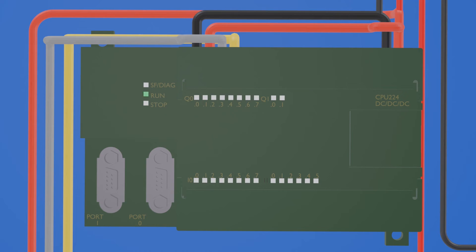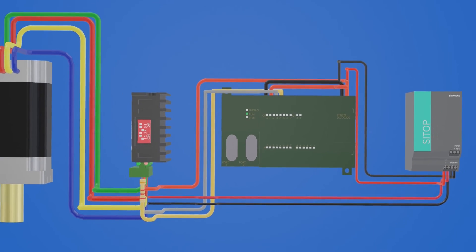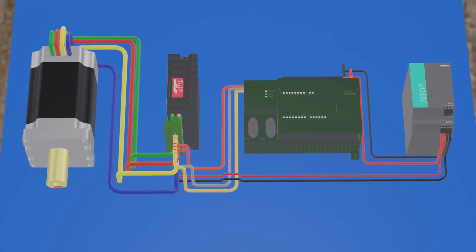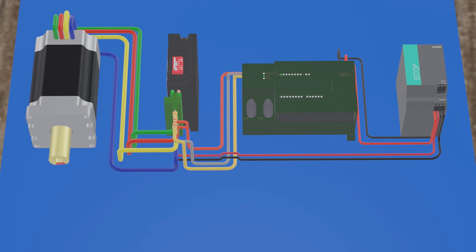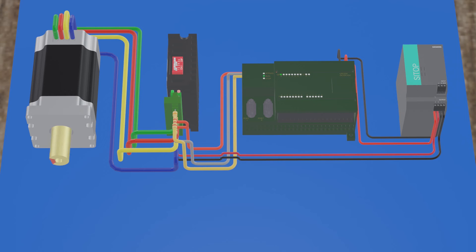Now we will place the PLC in run mode to visualize the operation of the stepper motor. We start with speed mode: turning on output Q0.0, it turns to the right and stops at any position. Now turning it to the left by turning on output Q0.0 and Q0.1, and ending at any position.